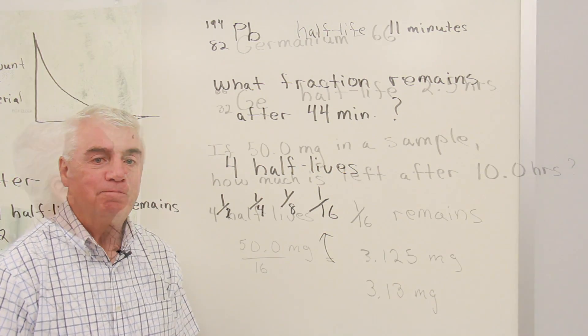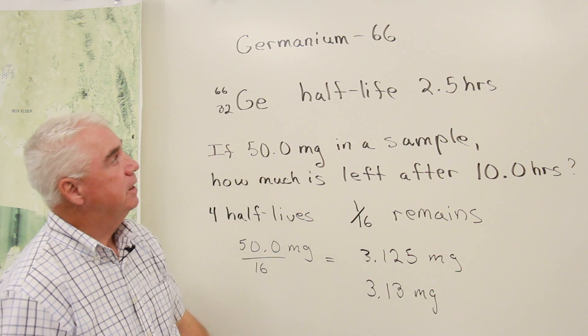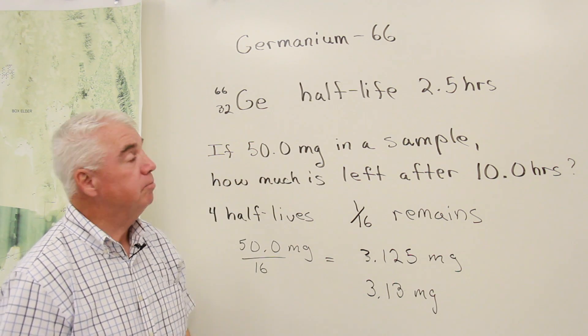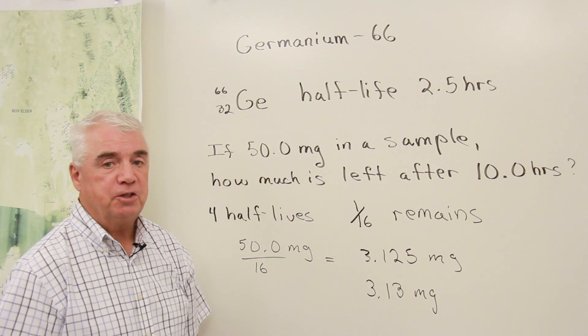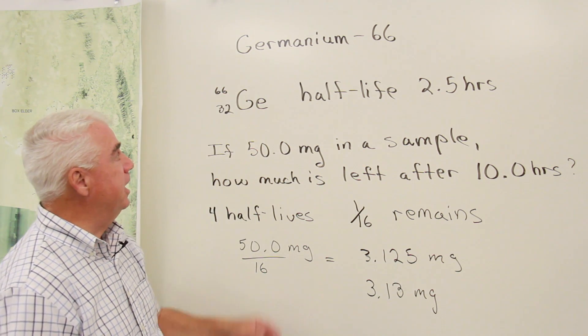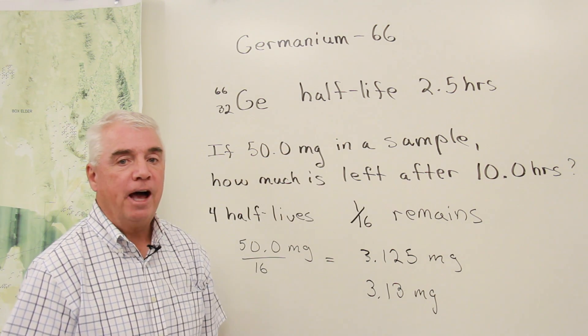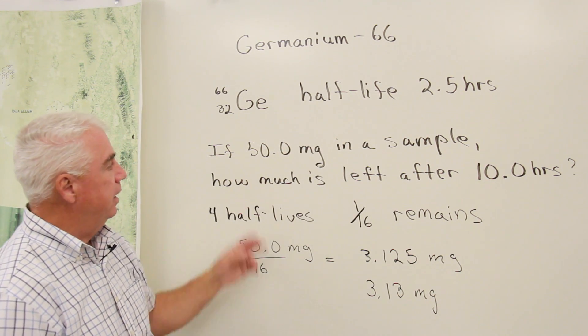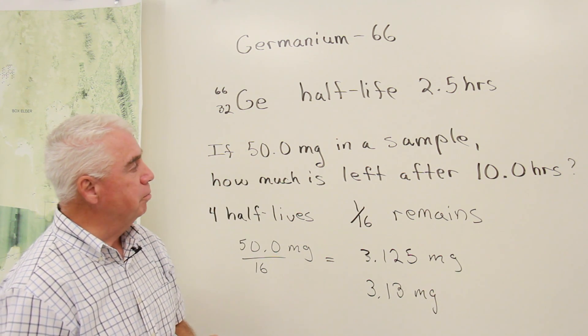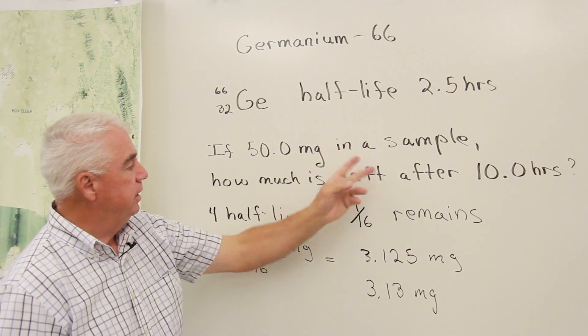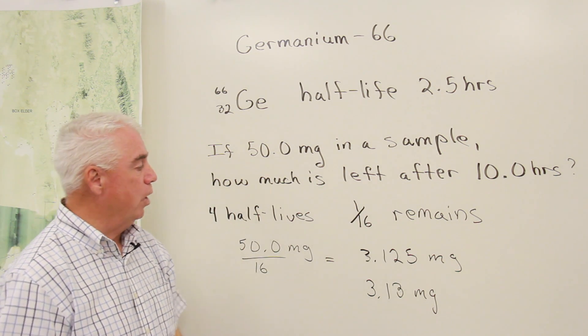Let's look at another problem. This problem involves germanium-66. When we put the 66 after the name of an element like this, it means that this upper case number is what we're designating. Germanium is element number 32. Its half-life is 2.5 hours. Here's the problem. If we start with 50.0 milligrams of germanium-66 in a sample, how much is left after 10.0 hours?